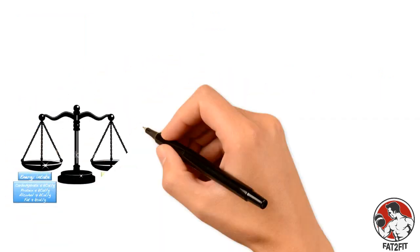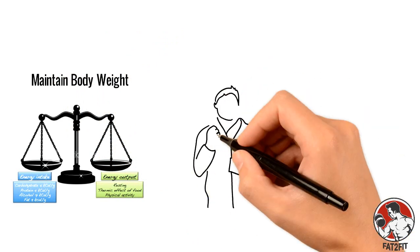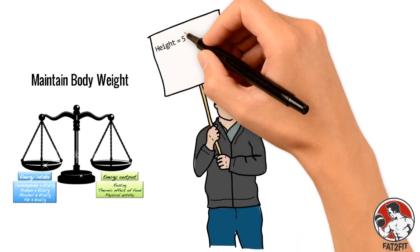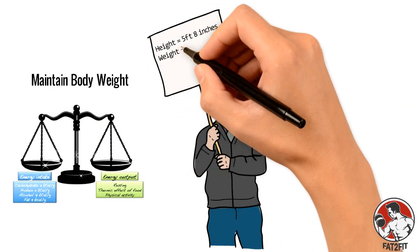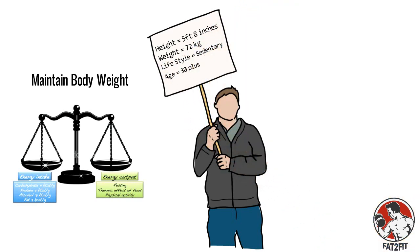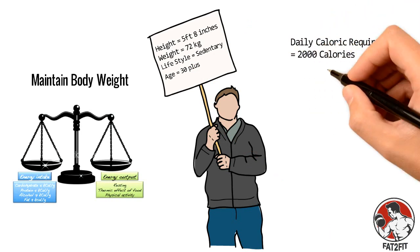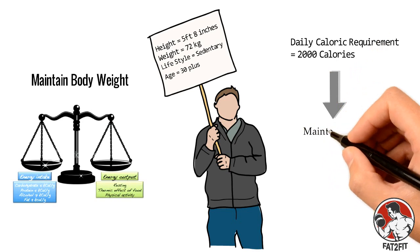Every individual has a daily caloric requirement to maintain their body weight. Let's say you're 5 foot 8 inches tall, 72 kg, with a sedentary lifestyle and over 30 years of age. Based on this information, your daily caloric requirement is around 2000 calories to maintain the same body weight.